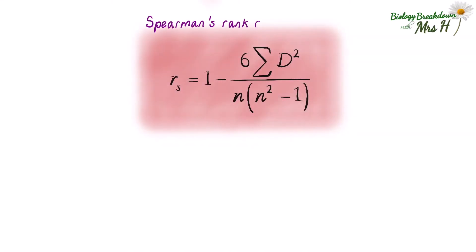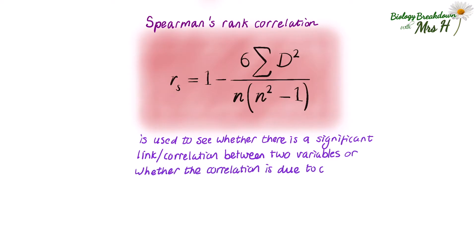You use the Spearman's Rank correlation to see whether there is a significant link or correlation between two variables or whether the correlation is due to chance.